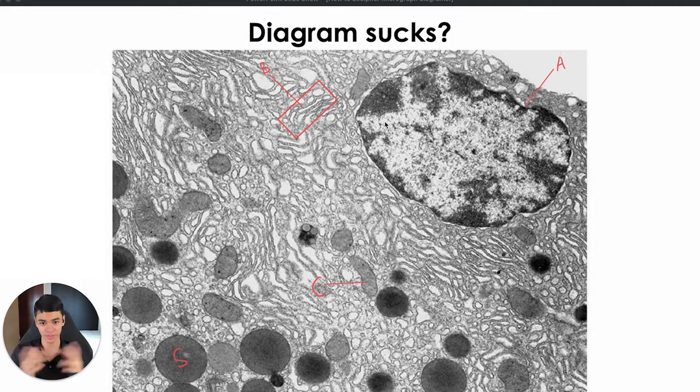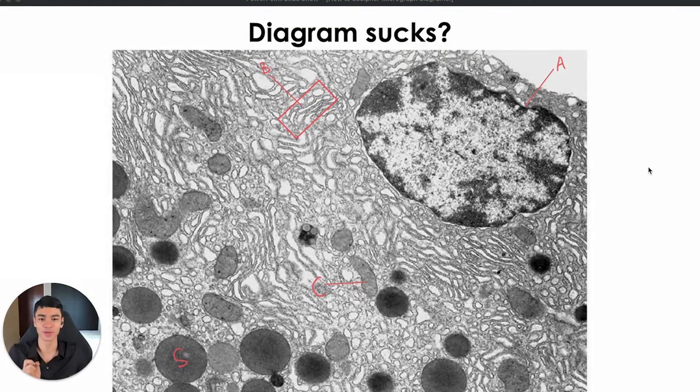What is that organelle? Since this is part of a cell, so if you said mitochondria, you're on the right track, but you will get it wrong because it's actually singular. They're only pointing to one, so it's mitochondrion.